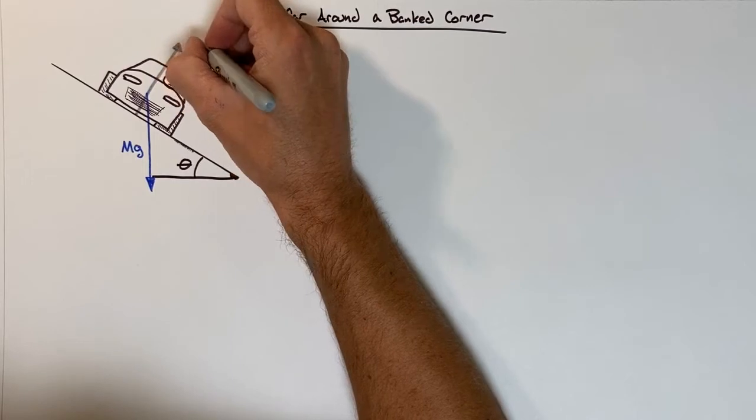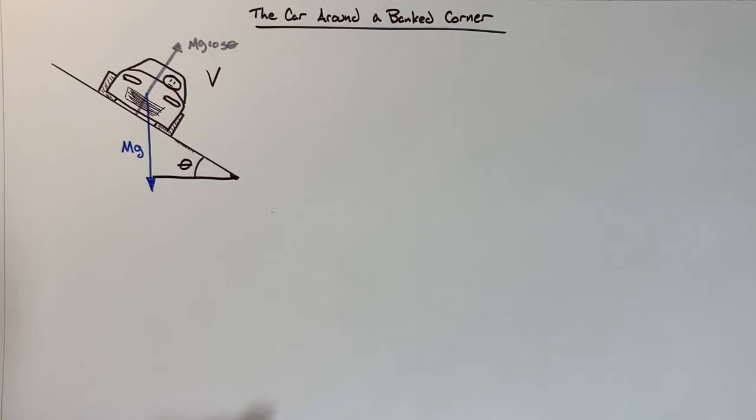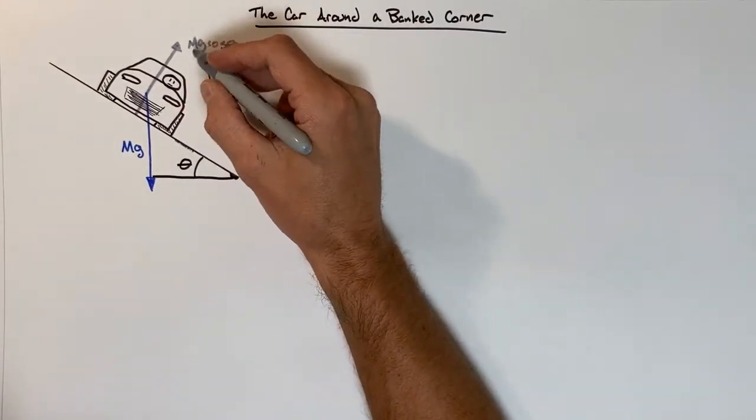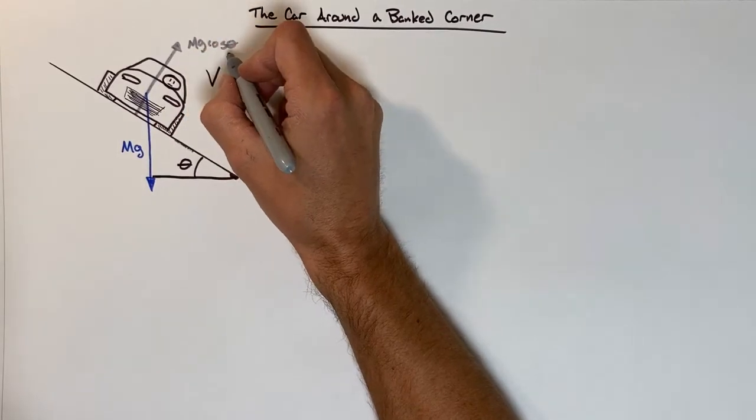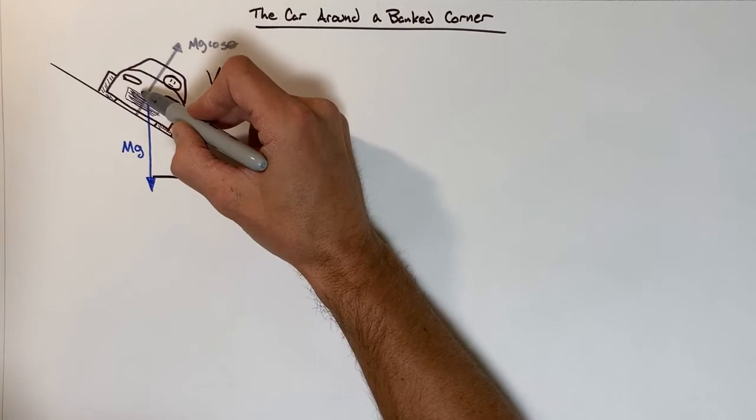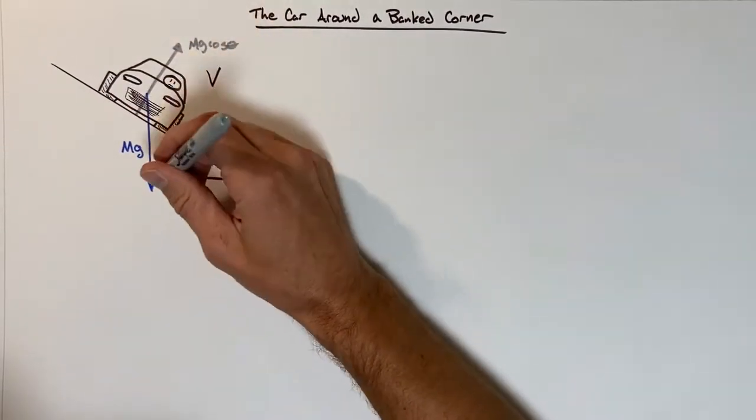But I want you to remember where this comes from. We derive this and we found that Fn is mg cosine theta for a block sitting on a hill in the situation where we're going to allow a block to accelerate within the plane of the hill.